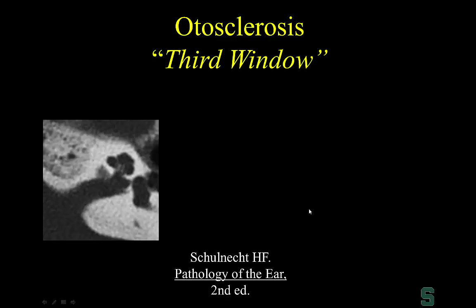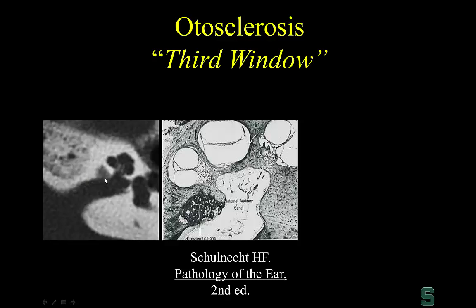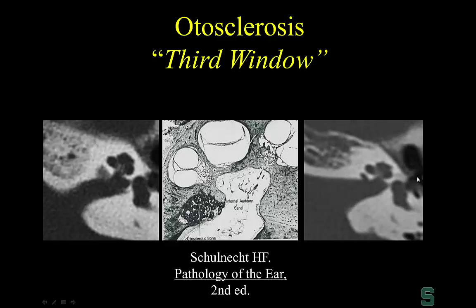A more recently recognized concept is the third window. On CT, you may not see classic otosclerosis at the fistula, but if you look at the internal auditory canal, sometimes you'll see smudginess of the bone or frank cavitation. This was actually described by Schuknecht in the 1950s. This is the third window — otosclerosis adjacent to the internal auditory canal. Otosclerosis can therefore involve the oval window fenestral, retrofenestral, or adjacent to the IAC.